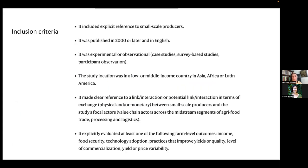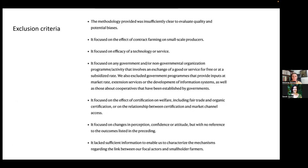This is just an example of what the inclusion criteria might look like for a study. There's often criteria related to the publication date, whether the study has to be in English or not — which would depend on whether you have people on your team with foreign language expertise — and then many different pieces of information about the study included in the criteria. Similarly, you'll have a list of exclusion criteria, which are often highly related to the inclusion criteria, and you'll use these lists to screen the studies.